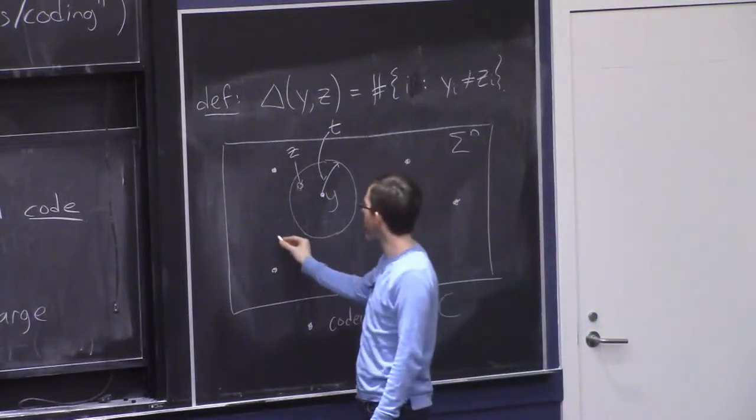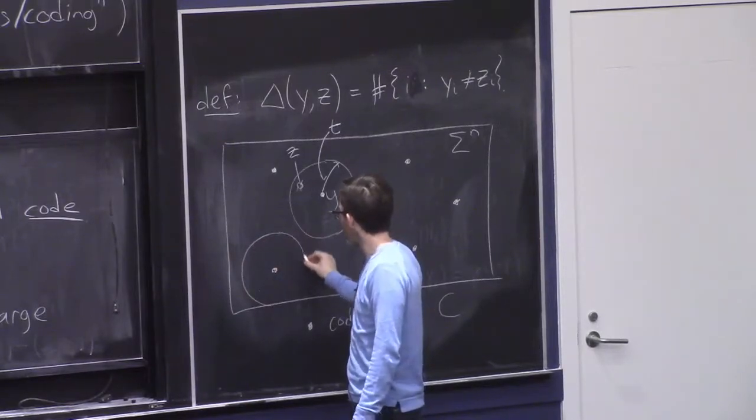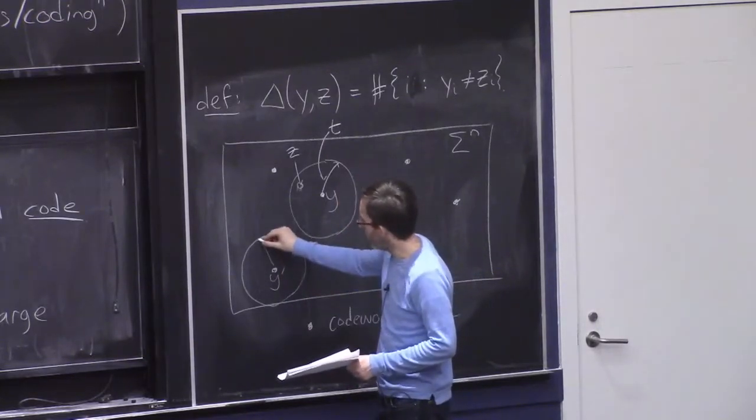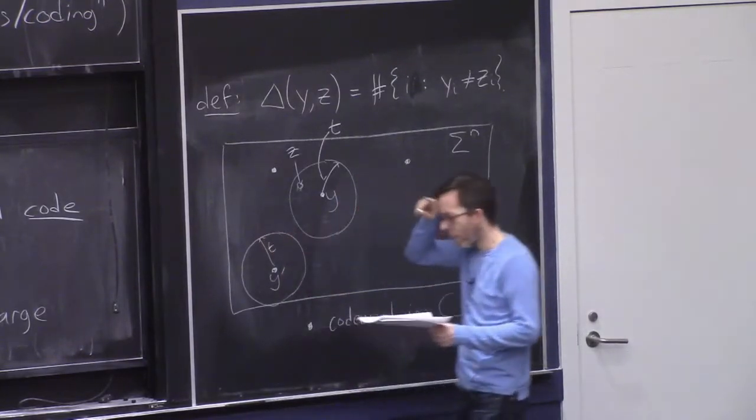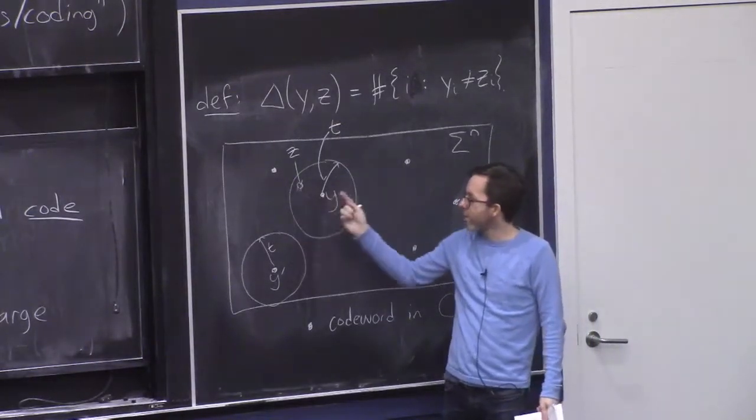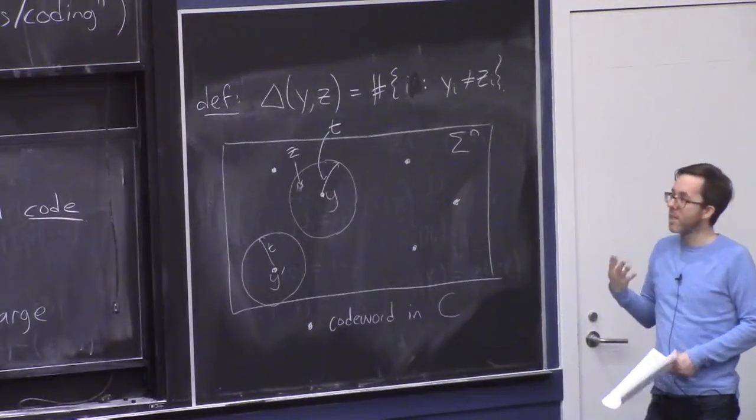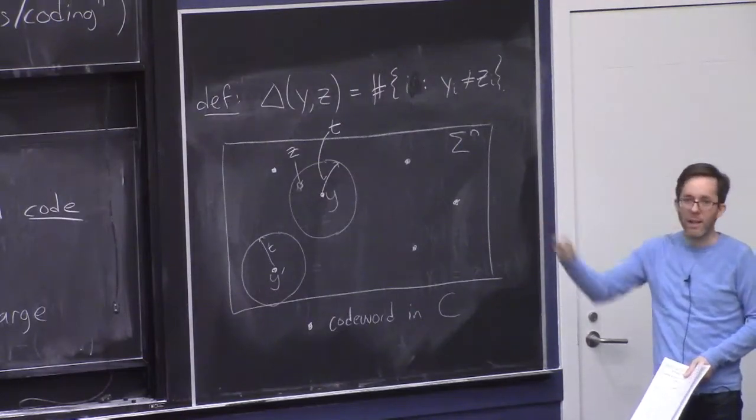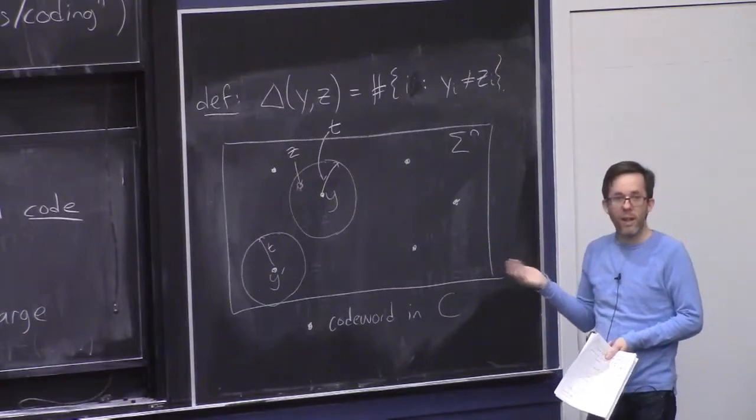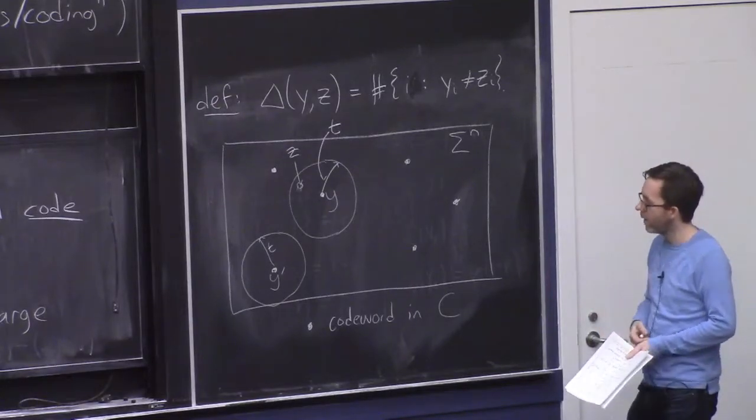So what you should really imagine is drawing a hamming ball of radius T around every codeword. Here's another codeword Y prime. This is a hamming ball of radius T. And as long as all these balls surrounding each codeword of radius T are disjoint, then a decoder can at least in principle solve the problem of given a Z that's corruption or hamming distance T at most from some codeword, figure out what is that codeword that it's closest to. We'll talk about algorithmic issues later, but in principle it can do it.